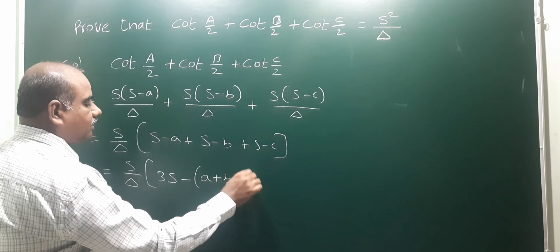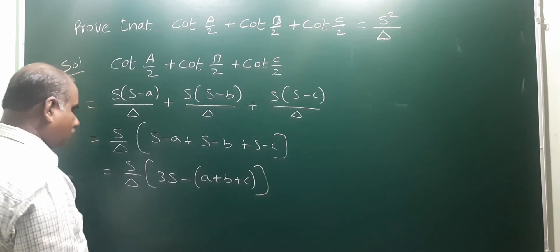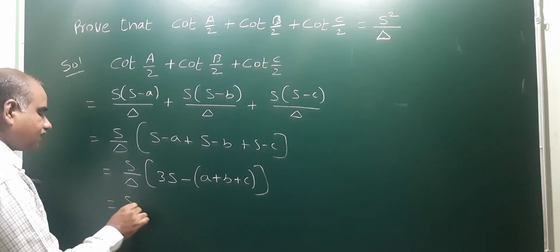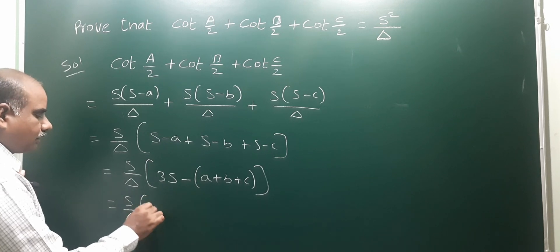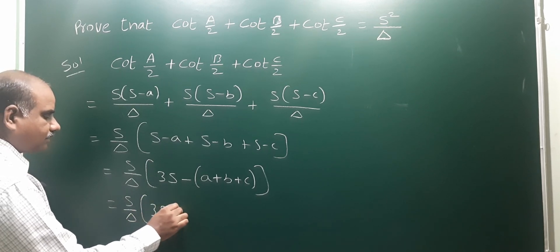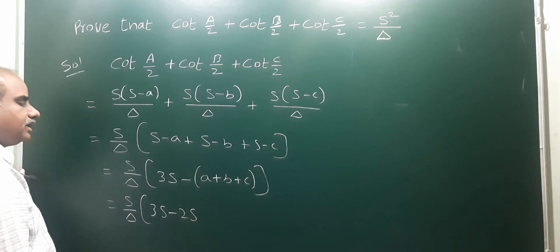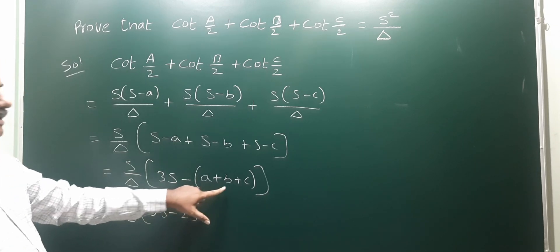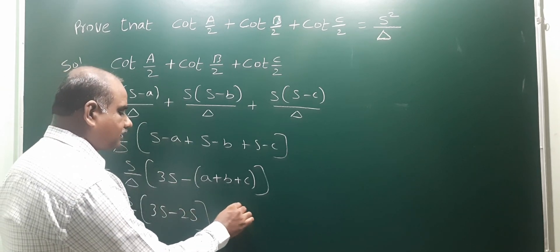That equals s/Δ times [3s - (a + b + c)]. We know that a + b + c, the sum of the sides of the triangle, equals 2s.